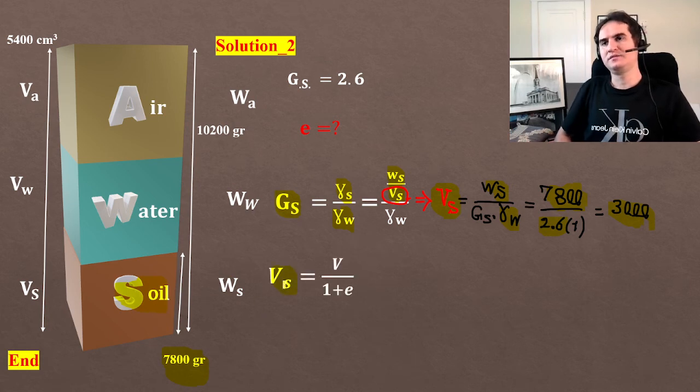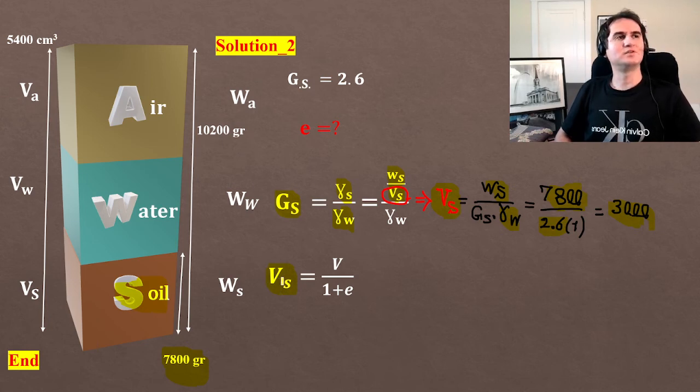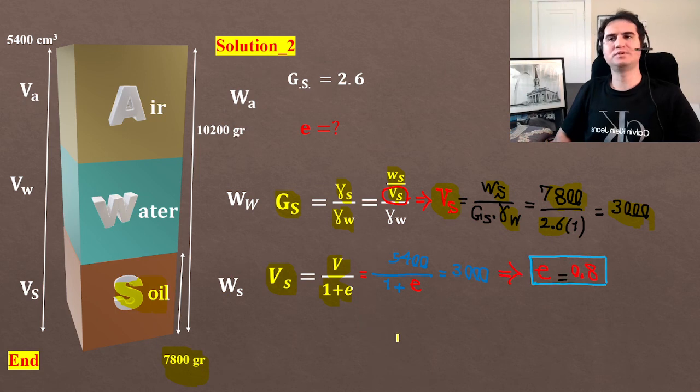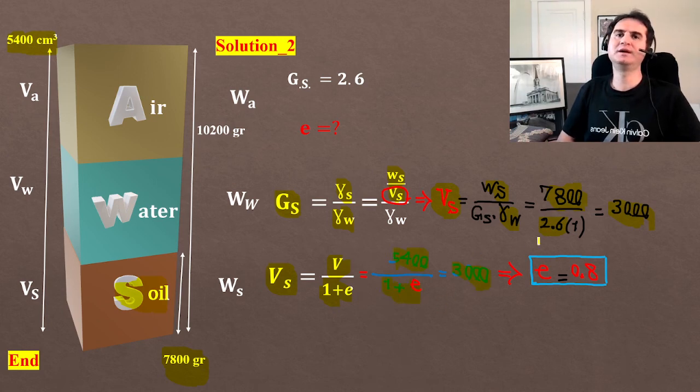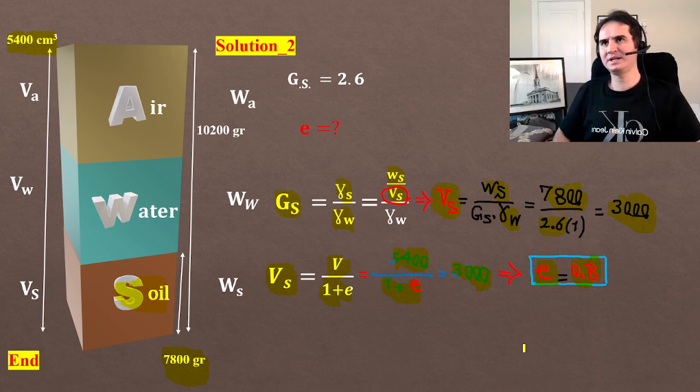From the review of formulas, Vs is total V over 1 plus void ratio. If you replace that in the equation, total volume of 5400 over 1 plus void ratio equals Vs, which is 3000. This gives you a void ratio of 0.8.